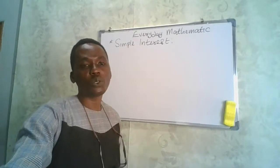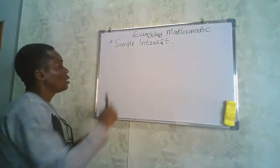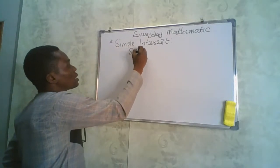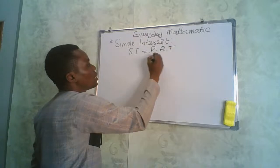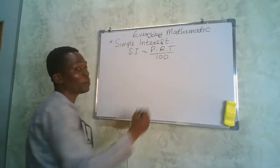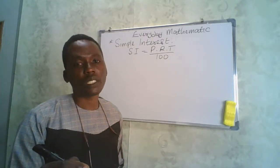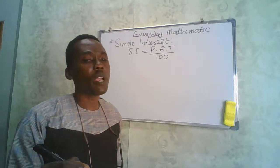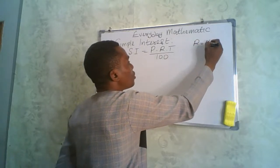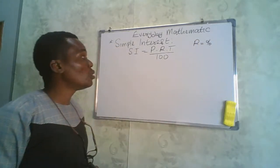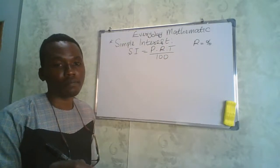When we talk about simple interest, the formula is: Simple Interest (SI) equals the principal multiplied by the rate multiplied by the time, all divided by 100. We divide by 100 because the rate is expressed as a percentage, so dividing by 100 converts it to a decimal proportion.